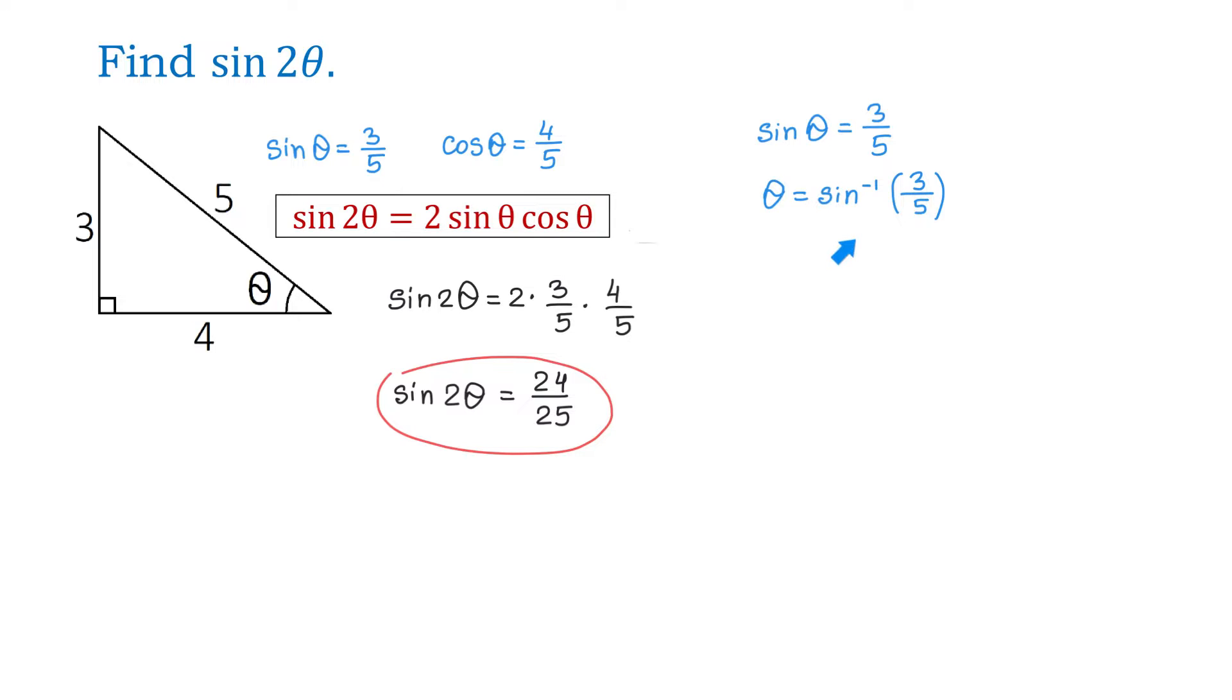So this is the value of theta. Now, in the expression sine of 2 theta, let's replace theta with inverse sine of 3 over 5.